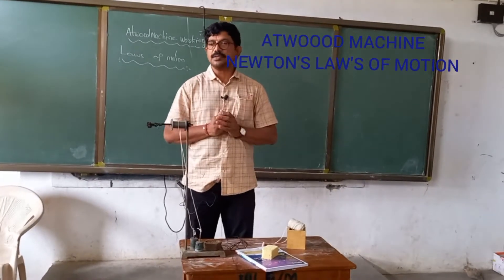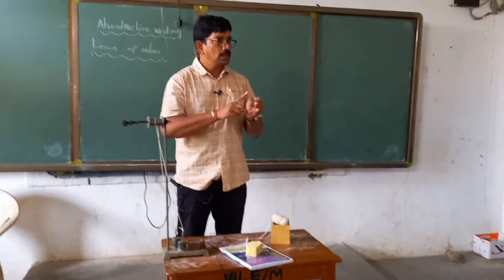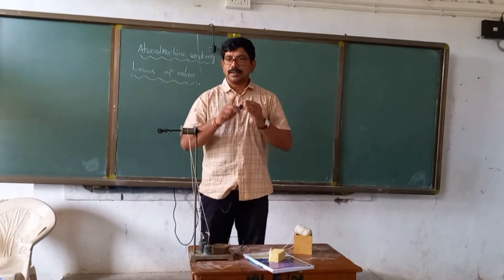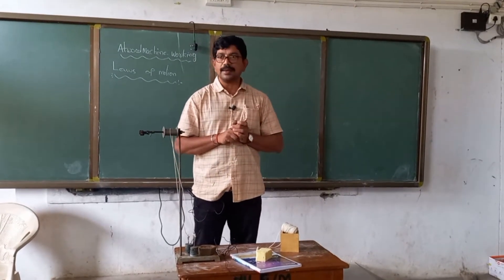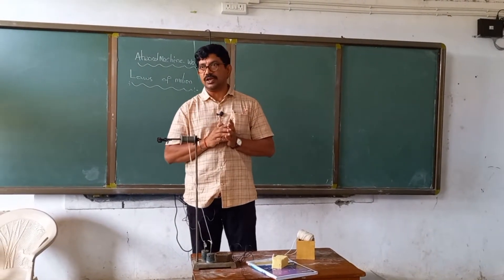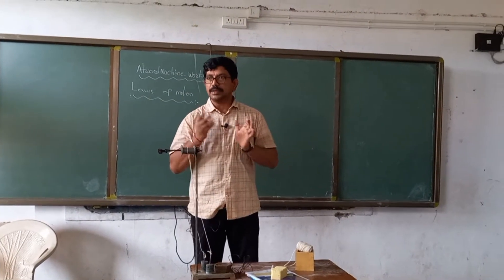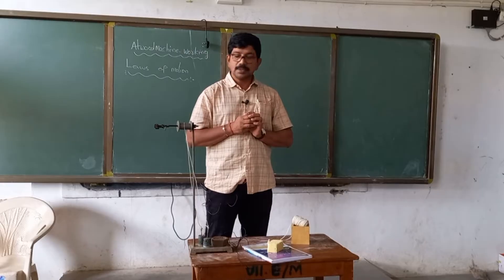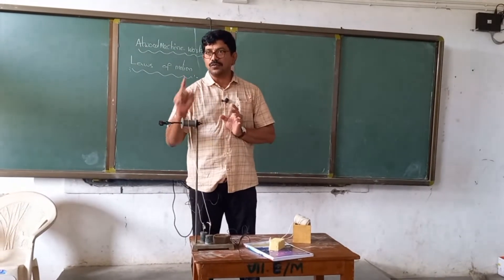Good morning children. In our previous class we studied about Newton's laws of motion — Newton's first law and Newton's second law. Newton's second law says that F is equal to MA. The rate of change of momentum is directly proportional to the applied net force and is along the direction of the net force. That is, force applied on a body is equal to M times the acceleration. In this class we are going to study the working of the Atwood machine.